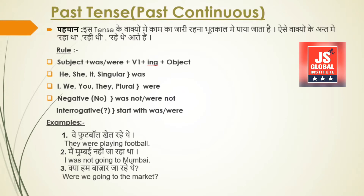For past continuous tense, the structure is: subject, then the verb's first form with -ing, and then the object. The basic thing you need to know is which auxiliary verb to use — 'was' or 'were'.